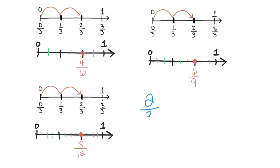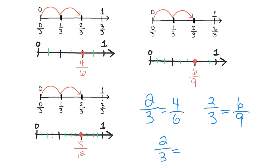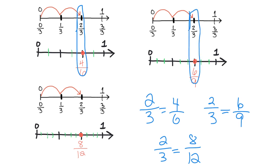So we can summarize our thinking. Two thirds is equal to four sixths — that's right here. Two thirds is equal to six ninths — that's right here. And two thirds is equal to eight twelfths — that's right here. We can see that two thirds is equal to four sixths, six ninths, and eight twelfths because they all land on top of each other.